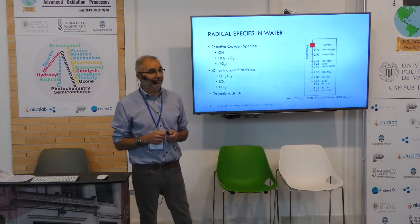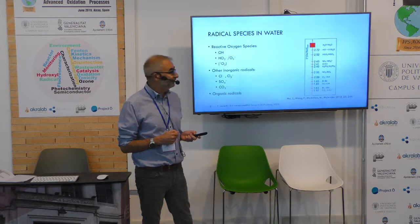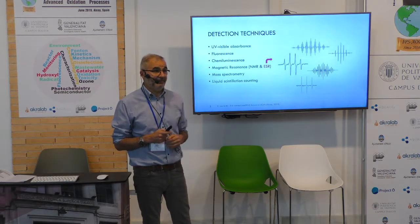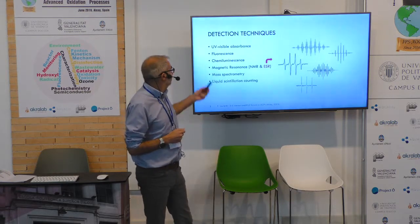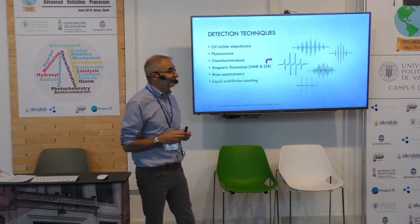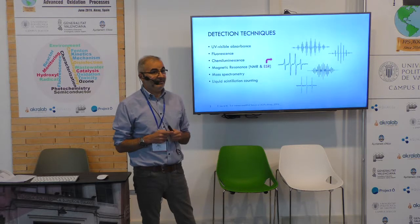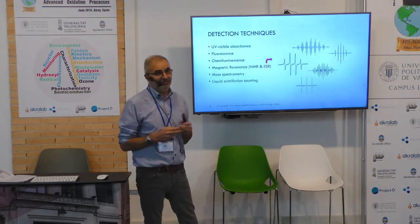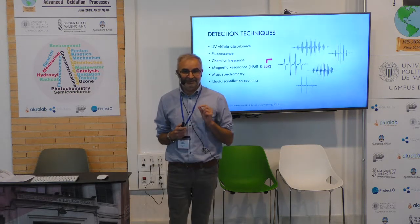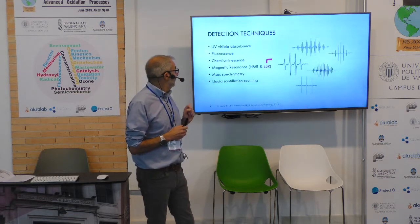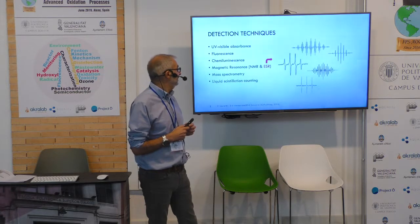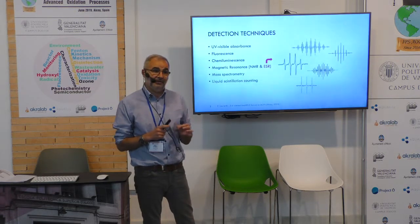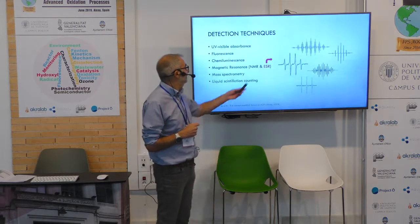The method we need to use to obtain information must obviously be different depending on the radical. The second aspect is which detection techniques we can use. Most of them are common techniques like UV-visible, fluorescence, chemiluminescence, specific techniques like magnetic resonance, nuclear and electron, mass spectrometry, liquid scintillation counting, and so on. I want to pay attention to one aspect: almost all of these techniques are useful for characterization of different substances, and not specific for radicals. The only one specific for radical species is electron spin resonance.